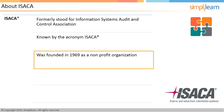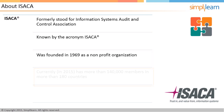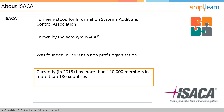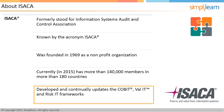ISACA was founded in 1969 and over the years has grown to have over 140,000 members in over 180 countries as of 2015. You too can become a member of ISACA by registering on their website, www.isaca.org. ISACA developed and continually updates the COBIT, VAL-IT, and RISC-IT frameworks, which help IT professionals and enterprise leaders fulfill their IT governance responsibilities and deliver value to the business. In addition, ISACA hosts international conferences as well as publishing journals.